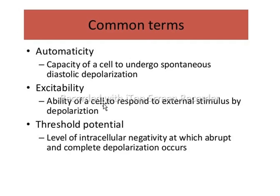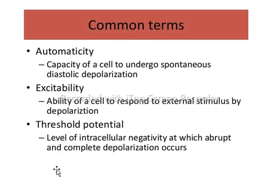These are some common terminologies used in arrhythmia. First is automaticity — the capacity of a cell to undergo spontaneous diastolic depolarization; sudden changes in diastolic depolarization are called automaticity. Second is excitability — the ability of a cell to respond to an external stimulus by the depolarization phase. Third is threshold potential — the level of intracellular negativity at which overt and complete depolarization occurs.